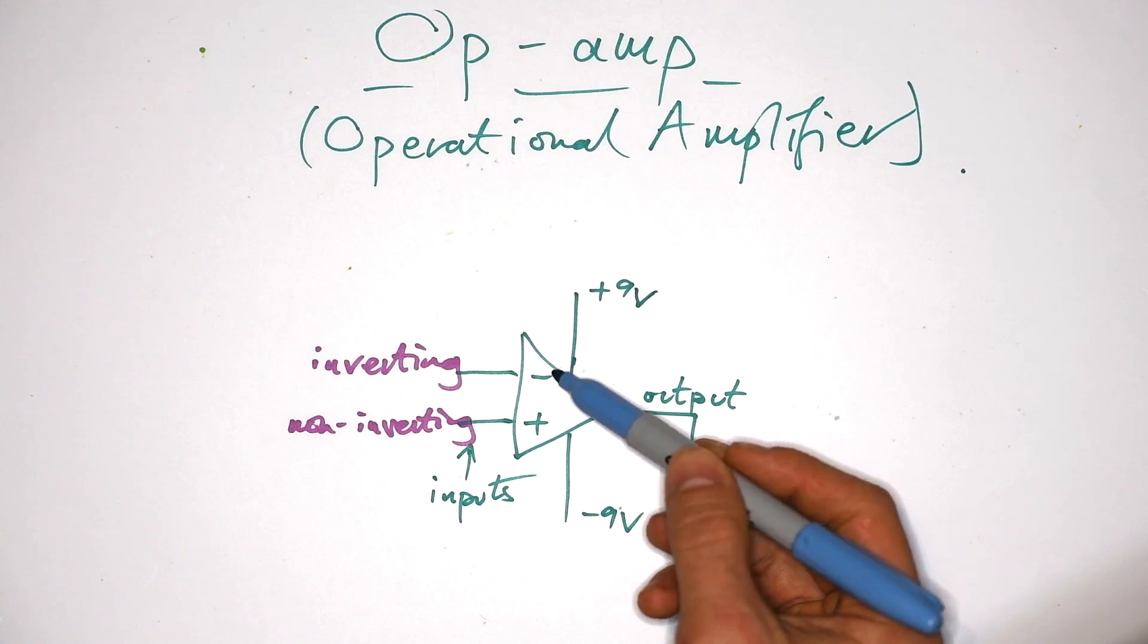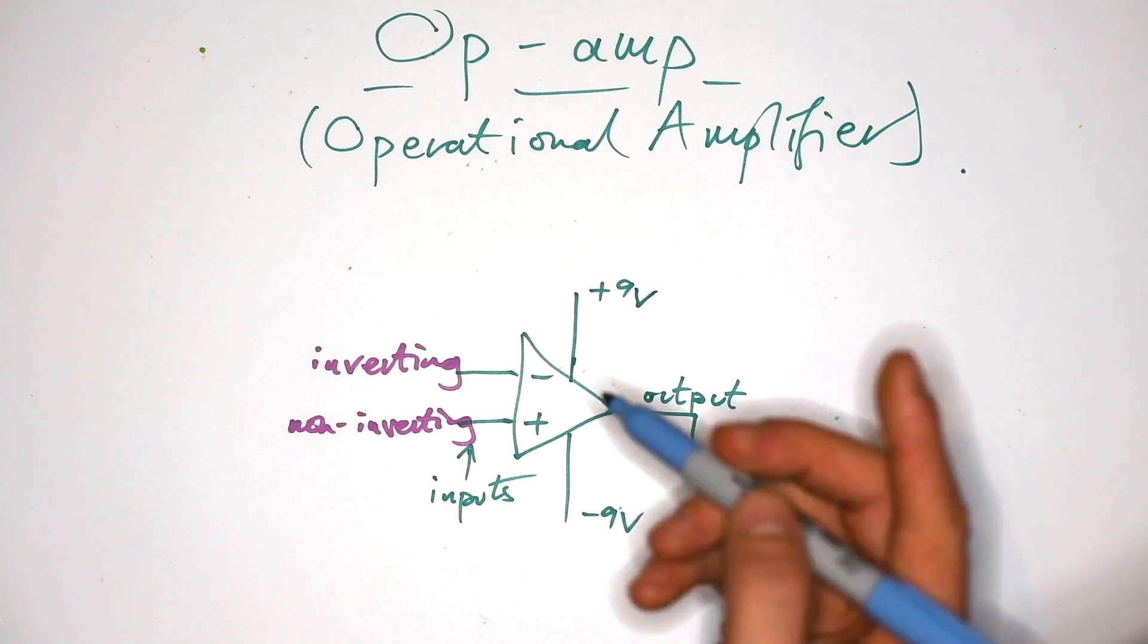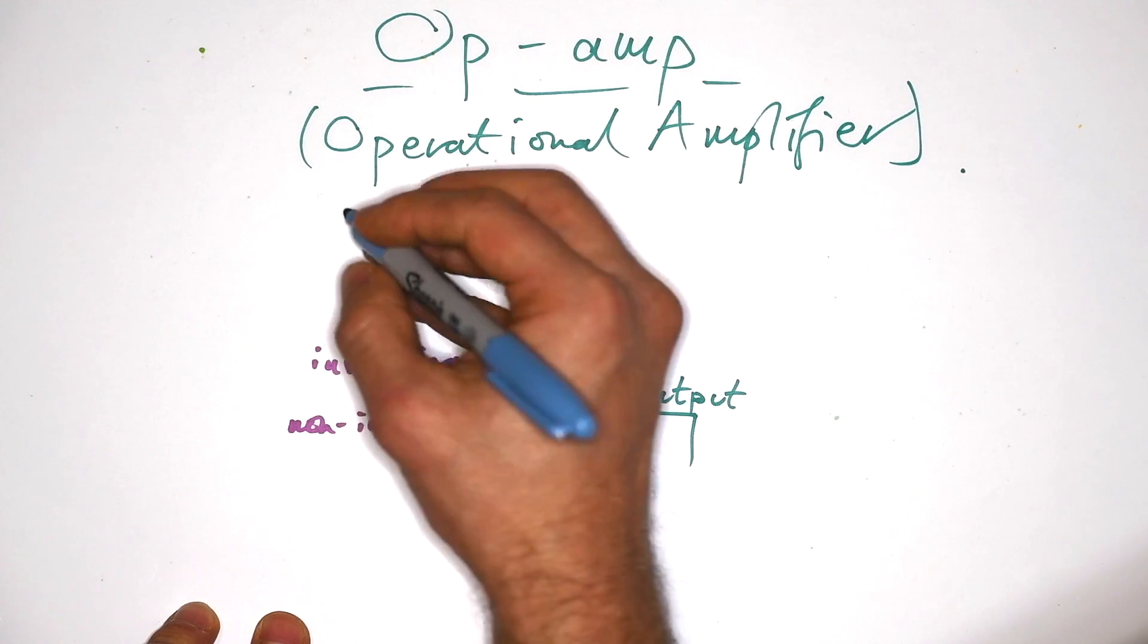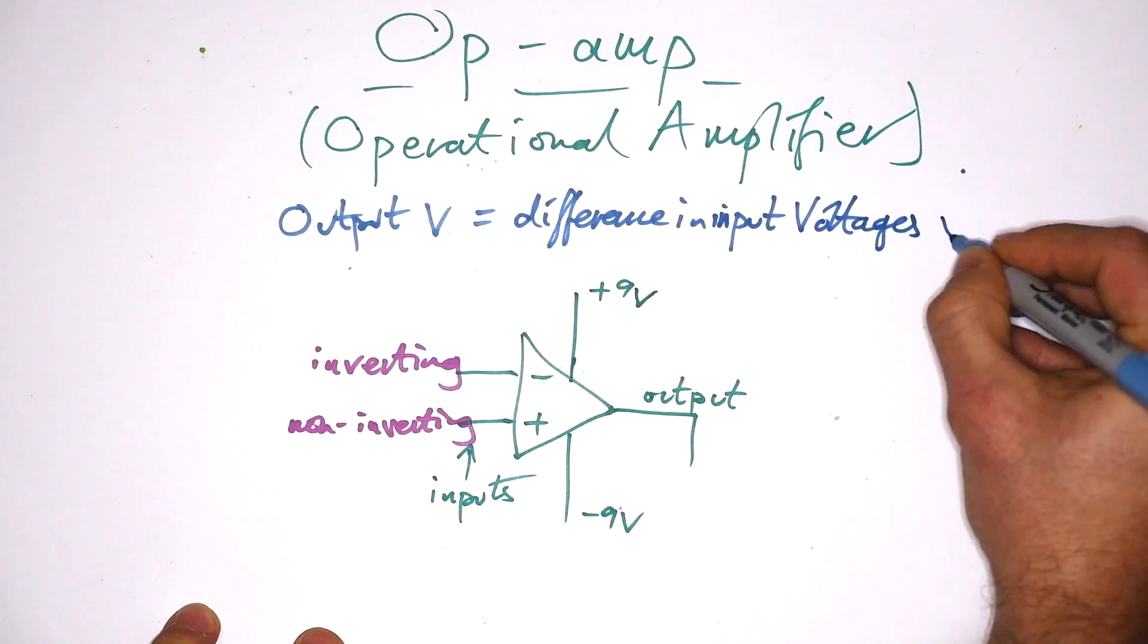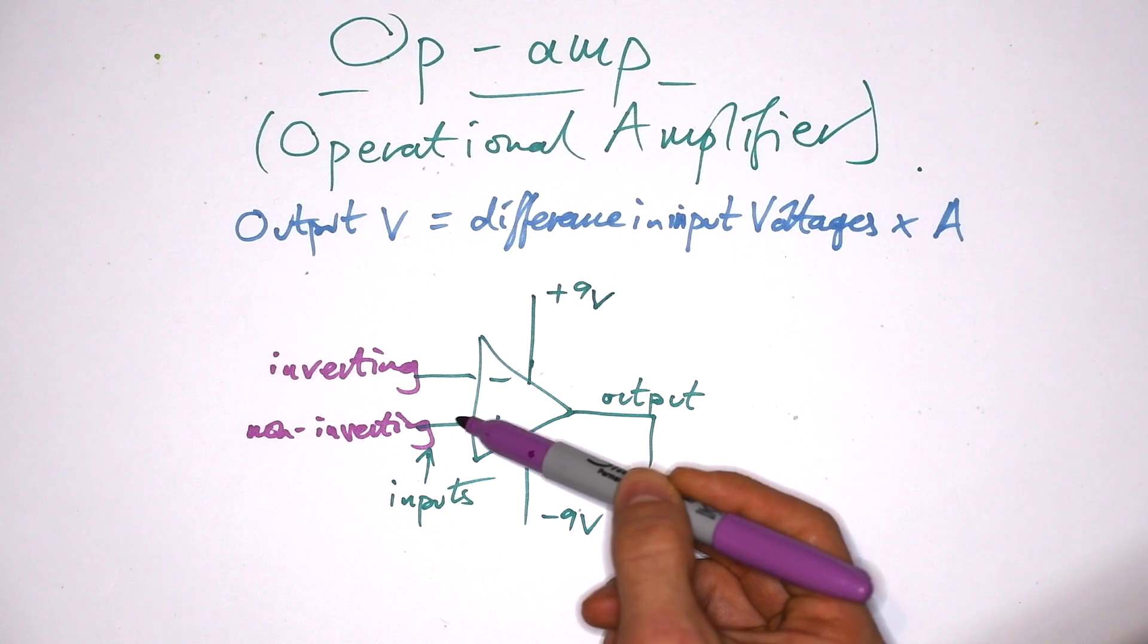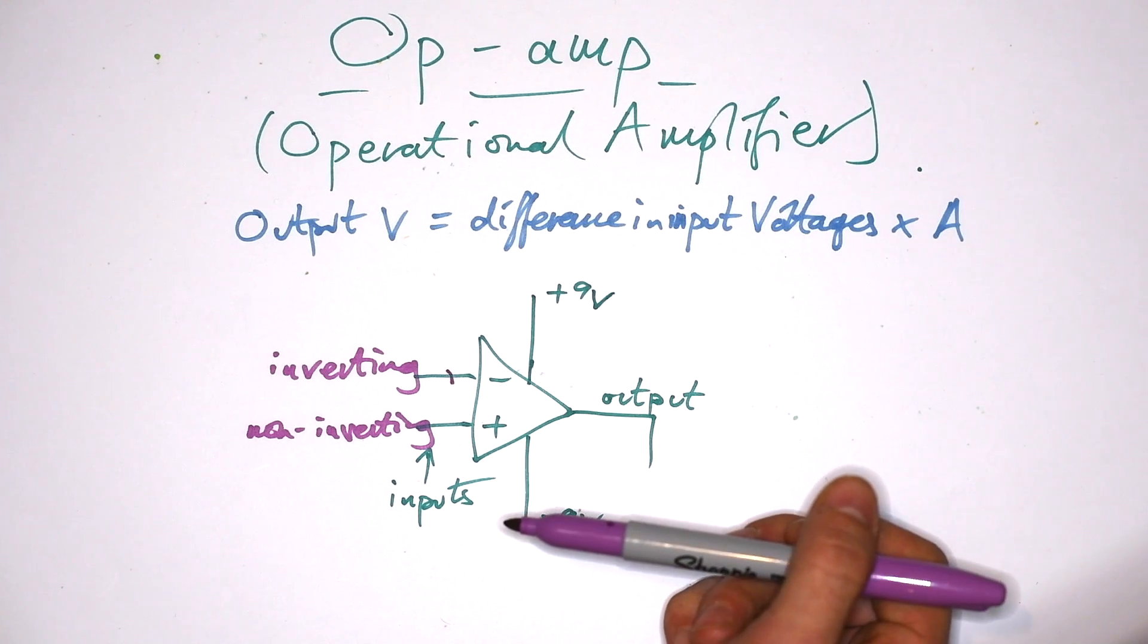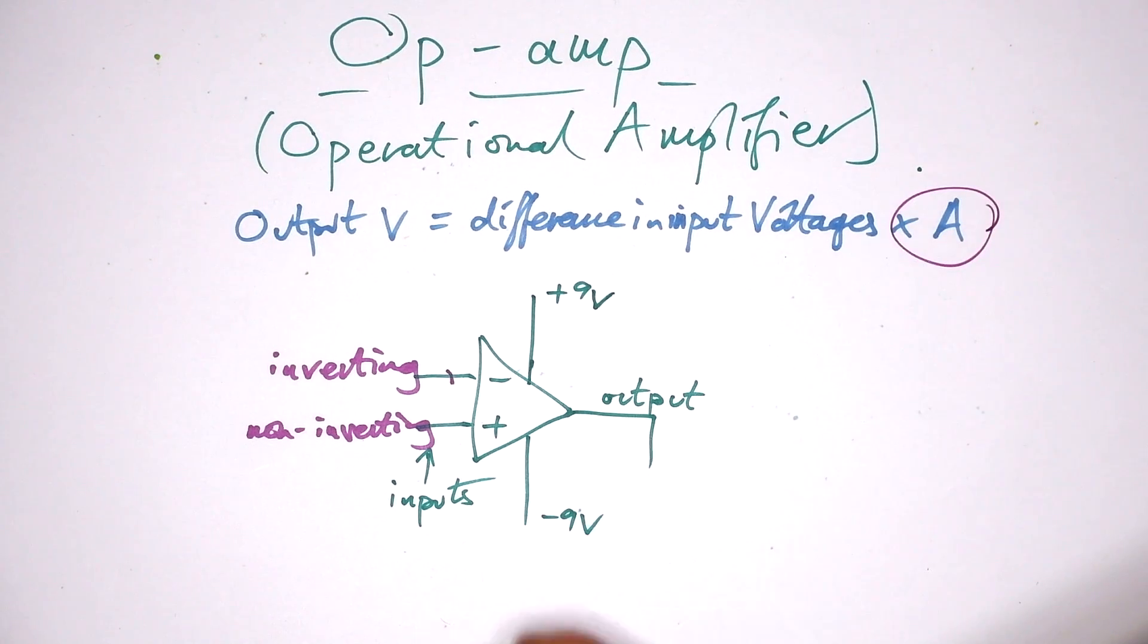So just because you have a plus here and a minus here, that doesn't mean that you always have a positive voltage going in here and a negative voltage going in here. What the op amp does is take the difference between the two voltages going into these two inputs, and it amplifies that. So we can say that the output voltage is equal to the difference in the inputs, and it times it by this amplification factor. So let's say that the input going in here is 5 volts, and going in here we have 2 volts. That means that the difference in input is going to be 3 volts. So what the op amp does is take that 3 volts and amplify it by this factor here.